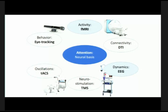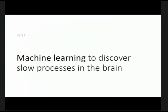The first part of our research is about applying machine learning to discover something about slow processes that happen in the brain. This is particularly relevant for this CSA summer school audience. How many of you actually know a little bit about machine learning or have used it before? Good — hopefully most of what I say afterwards will make sense.